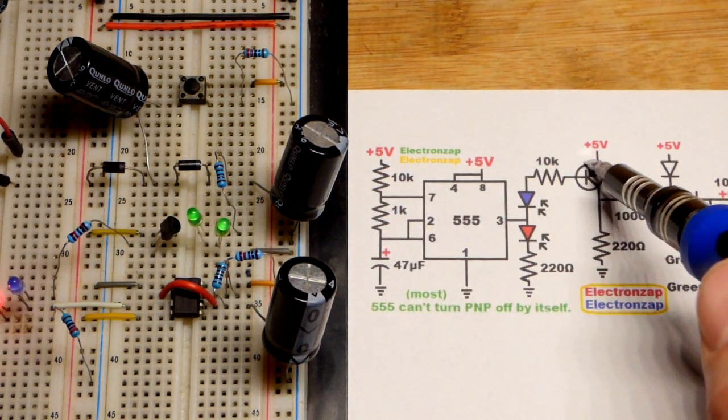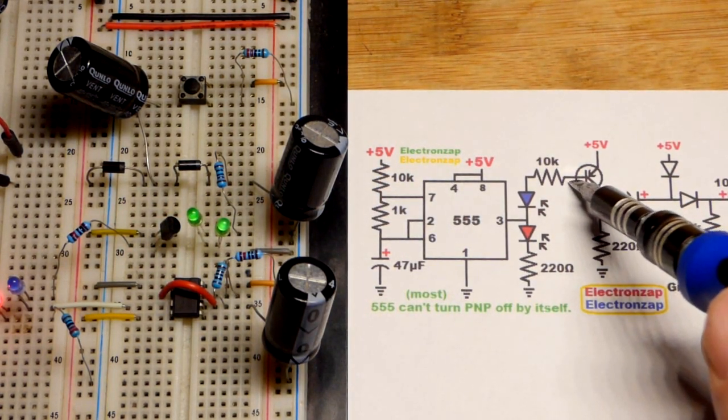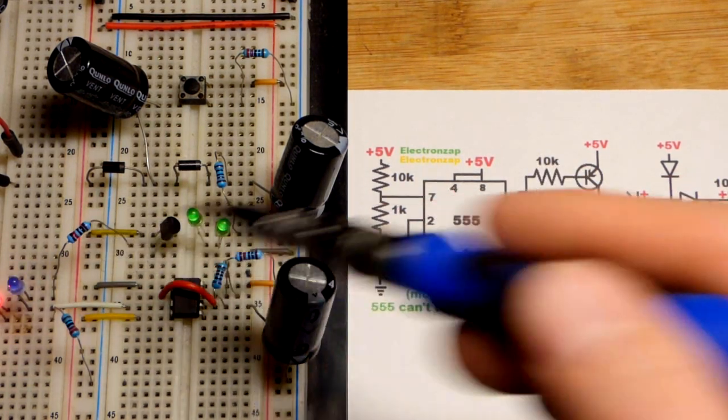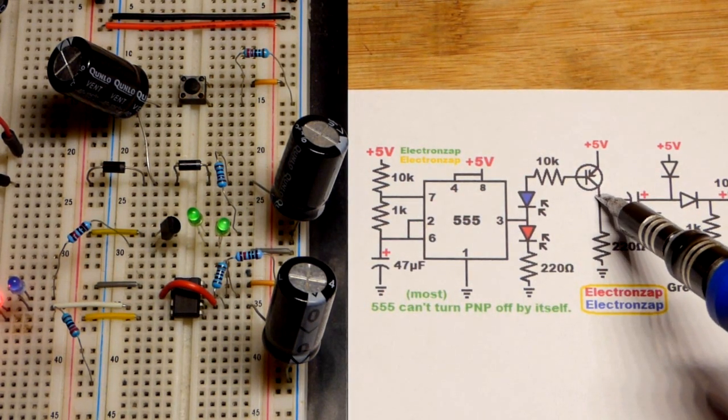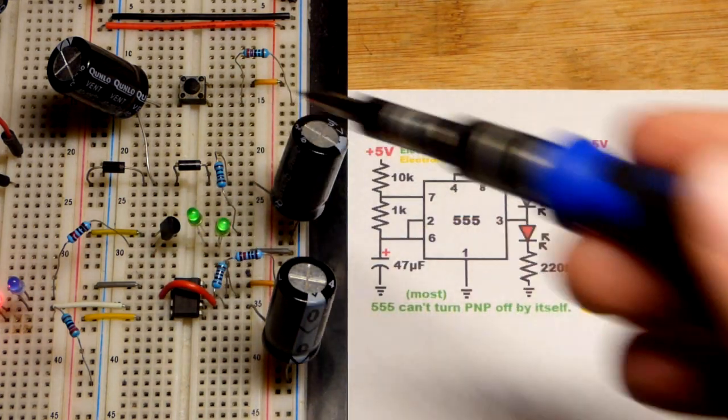Flat side to the left so top pin is the emitter that's where the arrow is, middle pin is the base that's where the 10 kilo ohm resistor is, and the collector down here right now it's floating we're going to use a jumper to bring it up there.